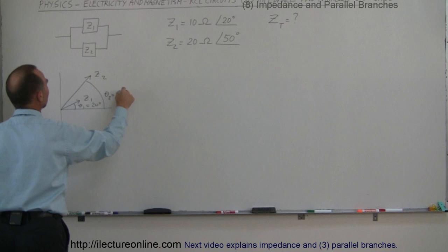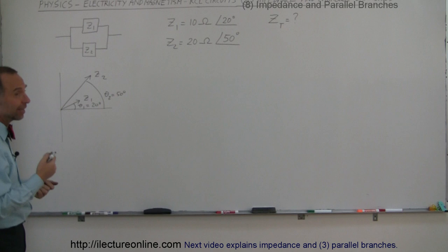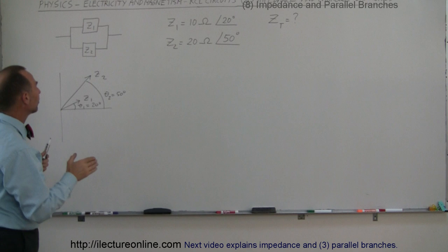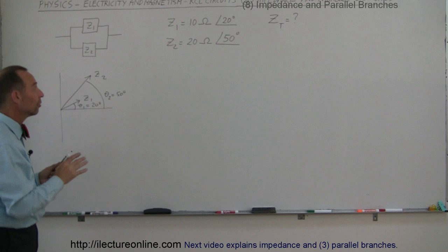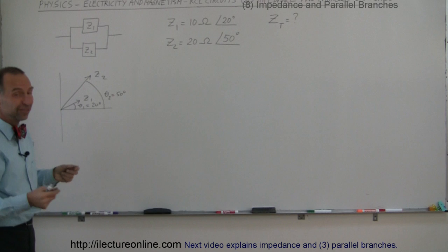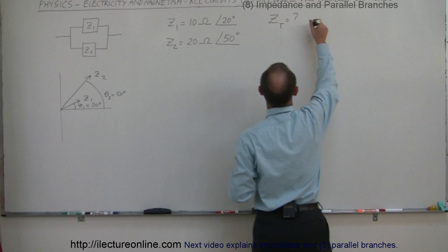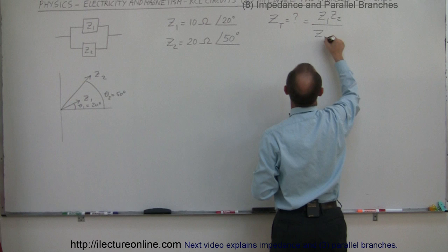We have to find the total impedance of these two. Since they're in parallel, we cannot simply add them together. We cannot do a vector addition, because that would give the total impedance if the two were in series, not in parallel. If it were a series circuit we'd just find the real and imaginary parts of each impedance and add them. But for parallel impedances, the total impedance is the product Z1 times Z2 divided by the sum Z1 plus Z2.